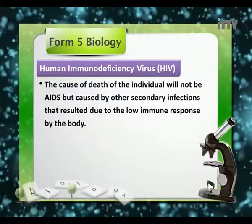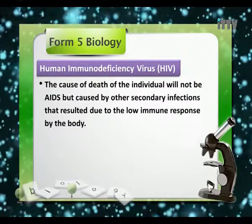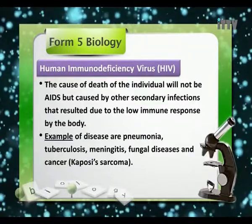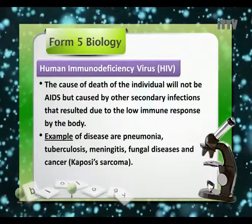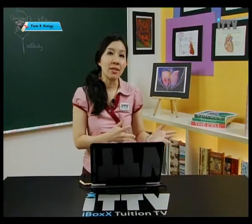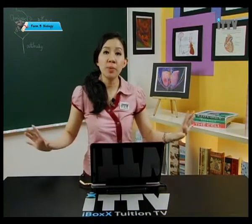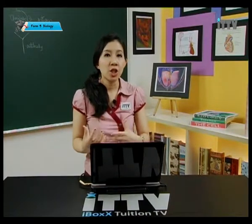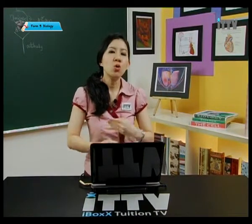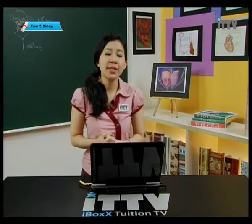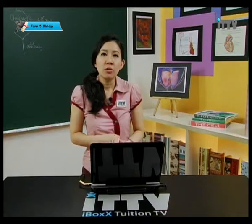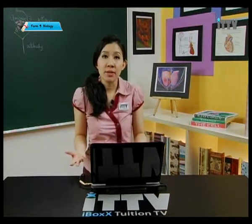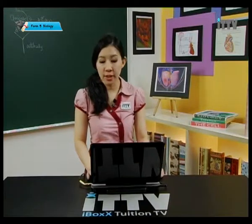The cause of death of the individual is not AIDS itself, but other secondary infections resulting from the low immune response. Examples include pneumonia, tuberculosis, meningitis, fungal diseases, and cancer such as Kaposi's sarcoma. A person with HIV does not die from AIDS but from these secondary infections — normal infections which healthy people can easily overcome. For a person with HIV, their immune system is compromised, so they can easily die from diseases — even fungal infections — that we would normally overcome.